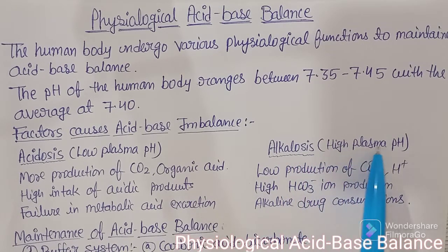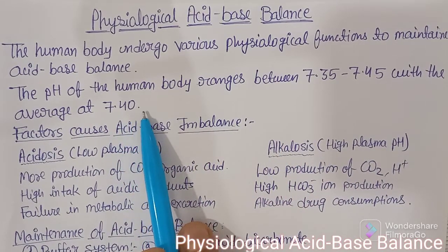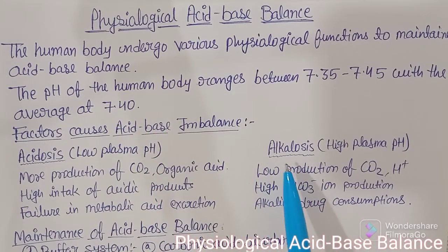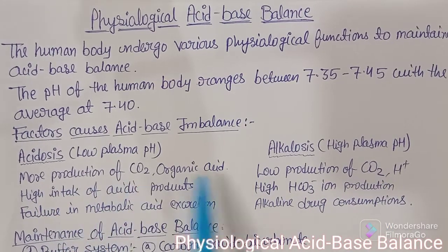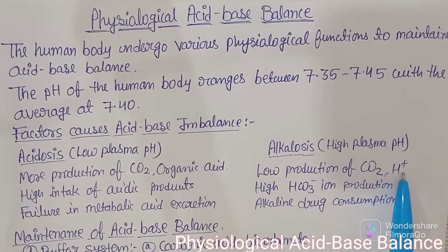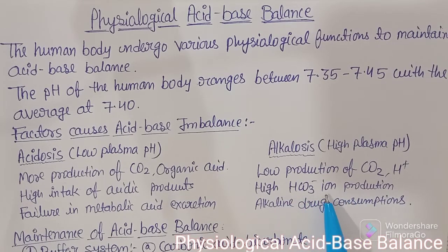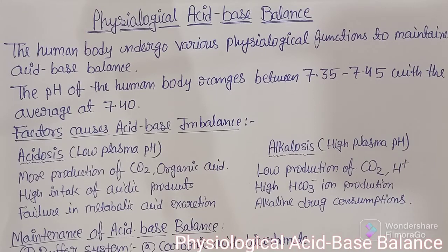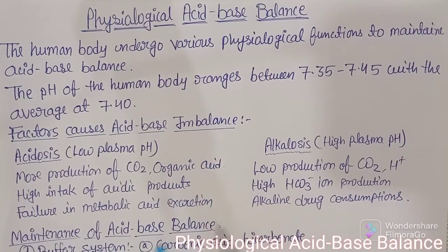Another condition is alkalosis — high plasma pH. When plasma pH increases above the normal average, the causes include: low production of carbon dioxide, low production of hydrogen ions, high production of HCO3 (bicarbonate), and alkaline drug consumption. When a drug is basic in nature and consumed frequently, the patient can undergo alkalosis.